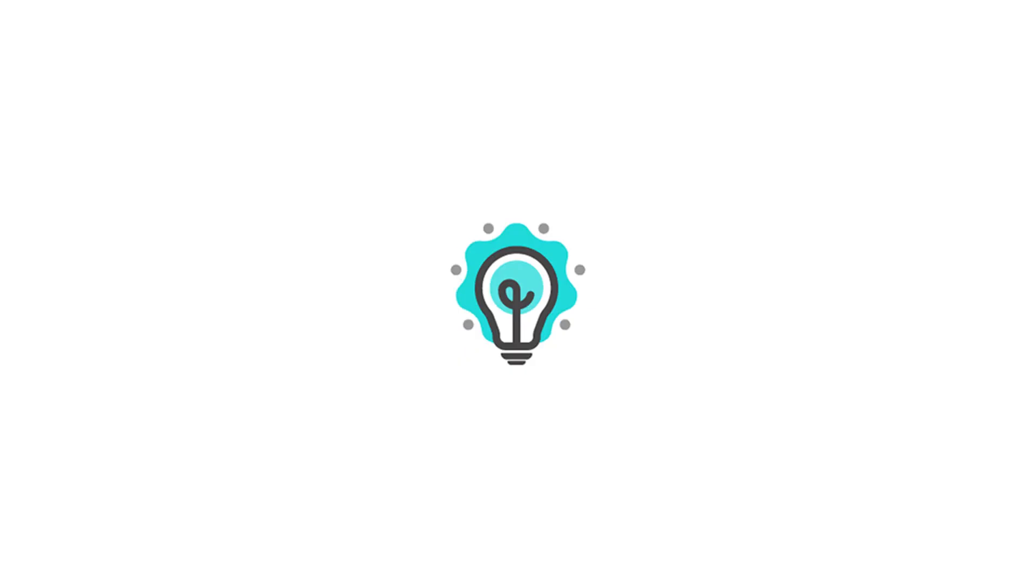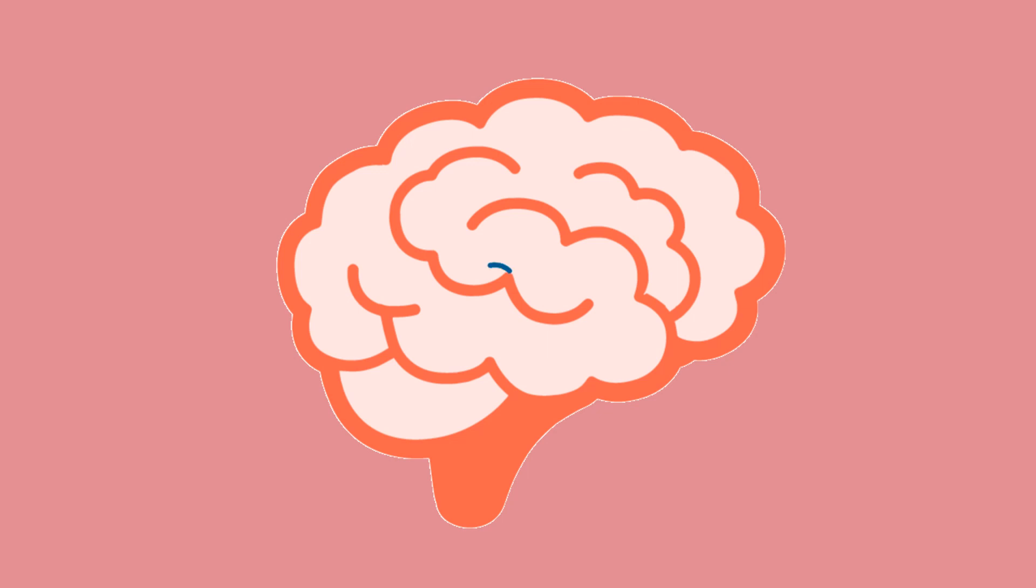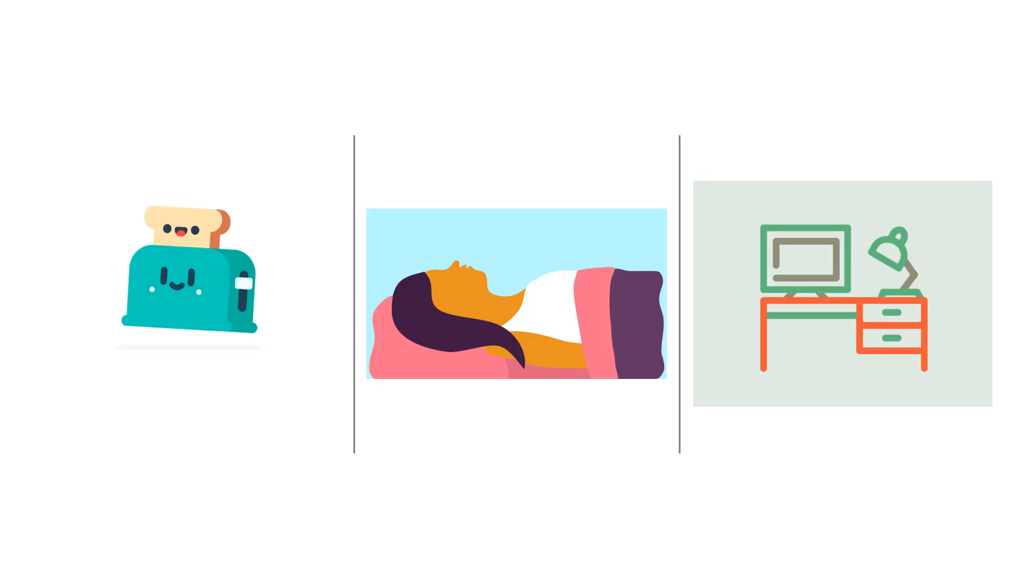Number two is to have a designated workspace because your mind needs to know when it's time to study. And it does this by forming a neuro association. For example, you associate your kitchen with food, your bed with sleep, and you want to associate your desk with a place of intense work and focus.